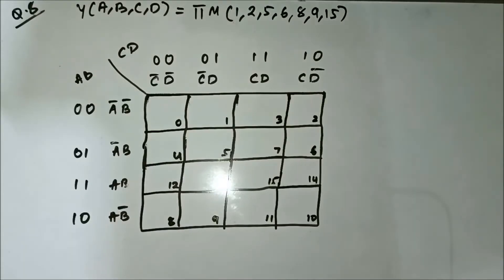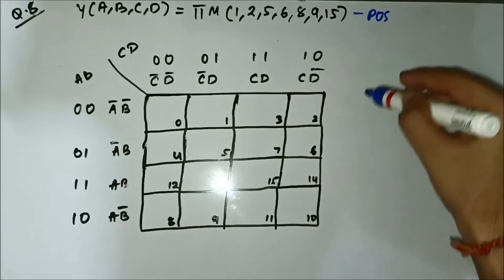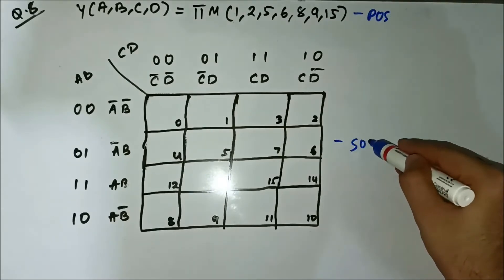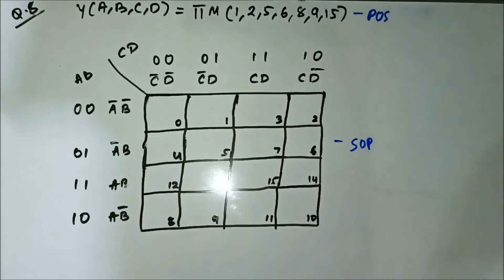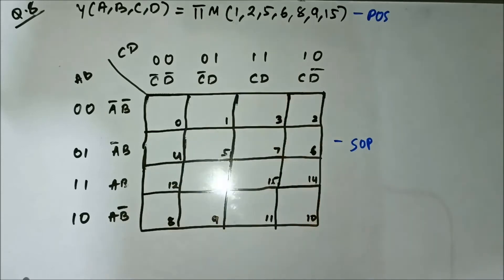Hello friends. This is the 8th question related to POS expression simplification using SOP K-map. We have a 4-variable POS expression given in terms of max term values. We have the format of the SOP K-map here, and first we'll map it into this K-map.